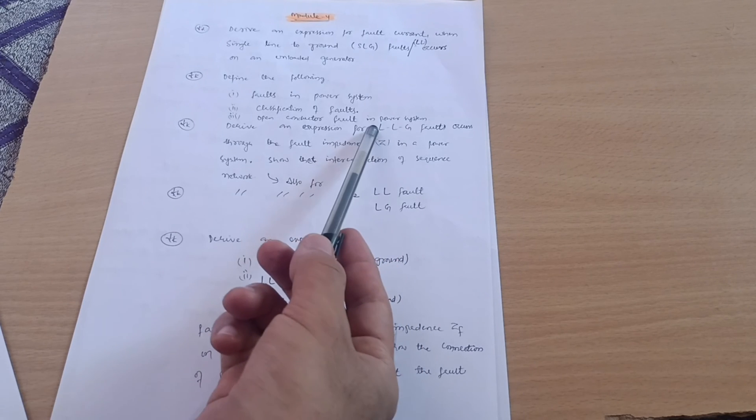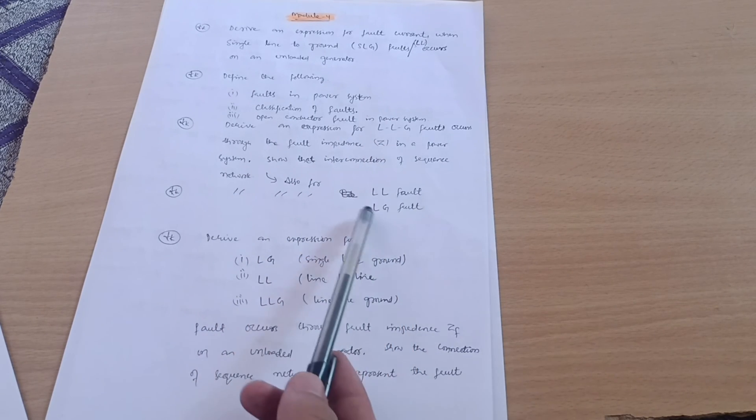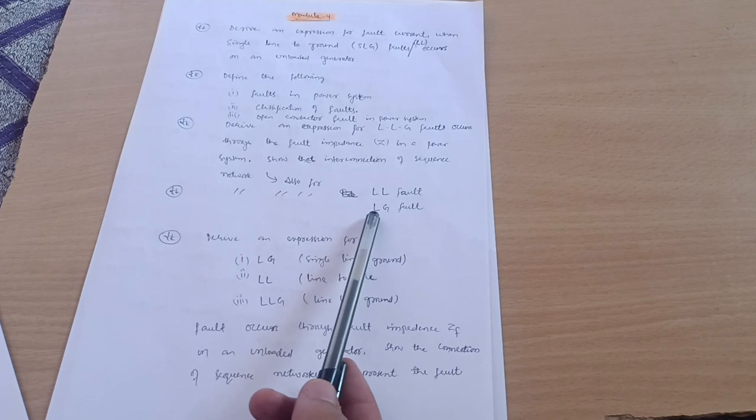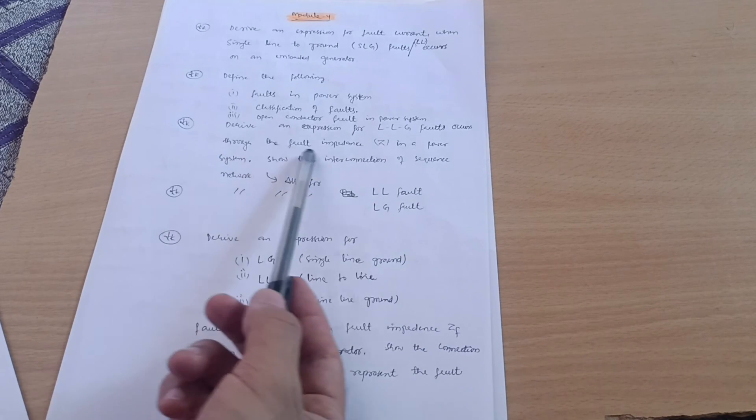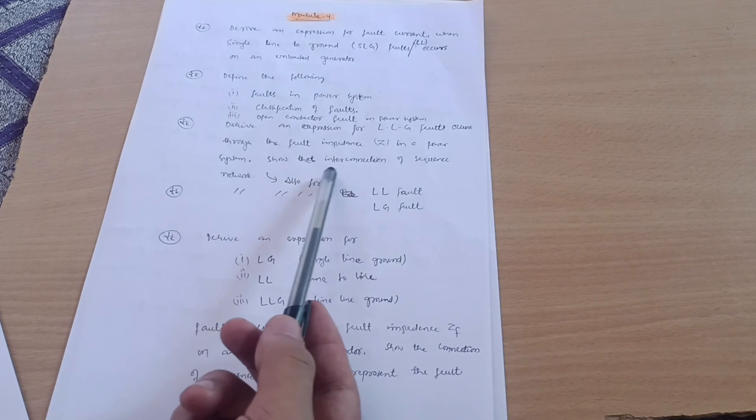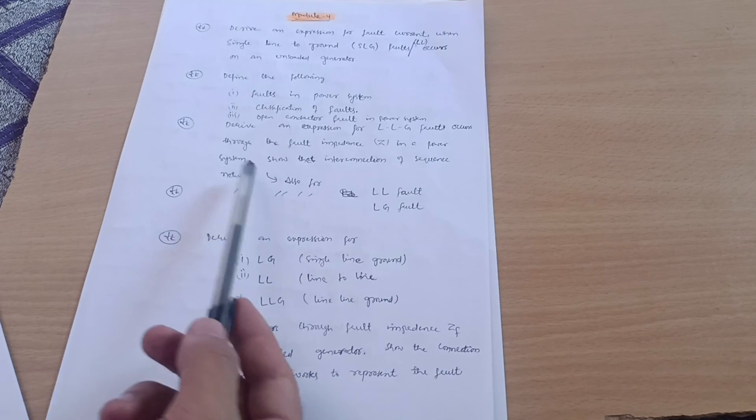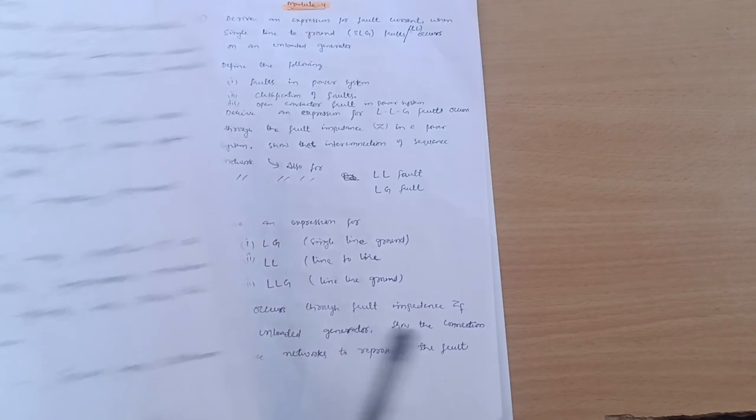This is the derivation part for these three: double line to ground, double line fault, and line to ground fault. These three faults occur through the fault impedance in a power system showing the interconnection of sequence networks. This is the derivation part of Module 4.